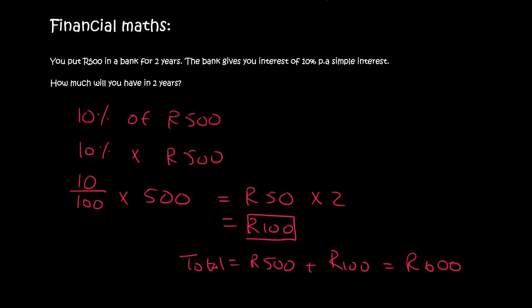Now, thankfully, we never have to go calculate it like this. This isn't the 15th century guys. We've got a formula. So, this formula over here does all of that for us. A is your final amount, P is the starting amount, I is the percentage and N is the number of years.